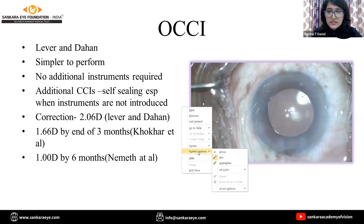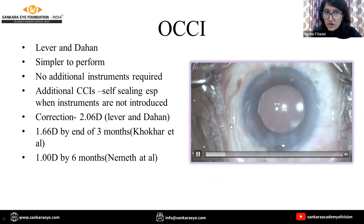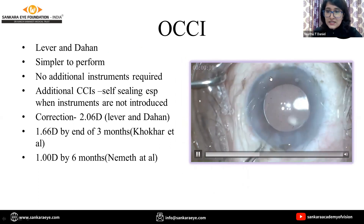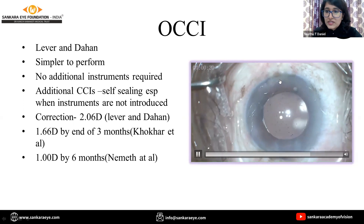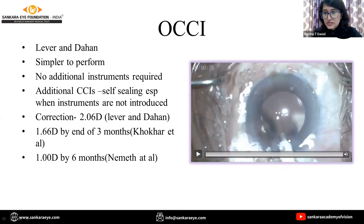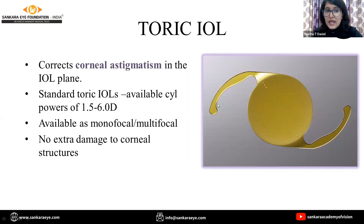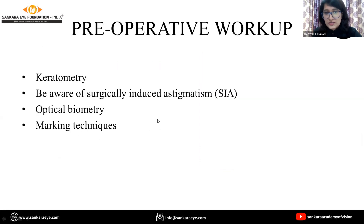Another way to modulate pre-existing astigmatism is the opposite clear corneal incision. As the name implies, we give a clear corneal incision diametrically opposite to the main FACO incision. Toric IOL is definitely the gold standard option — a premium option which corrects corneal astigmatism in the IOL plane up to six diopters, with no extra damage to the corneal structures.